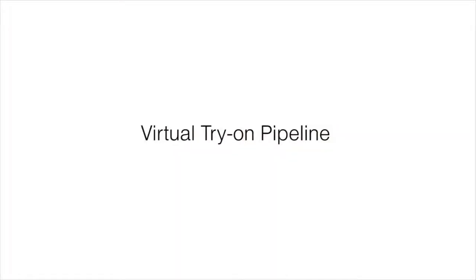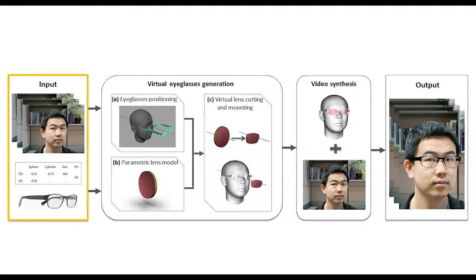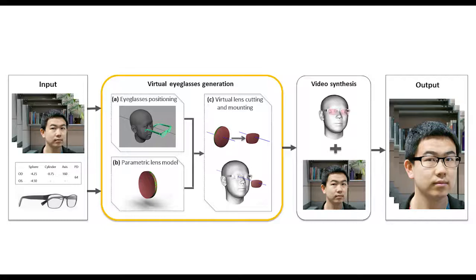Virtual try-on pipeline. The proposed approach takes as input the user's image sequence, eyeglasses prescription, and the frame model. The pipeline consists of two stages: virtual eyeglasses generation and video synthesis. Inspired by the traditional eyeglasses manufacturing process, the virtual eyeglasses are generated with three steps: eyeglasses positioning, creation of a parametric lens model, and lens cutting and mounting.